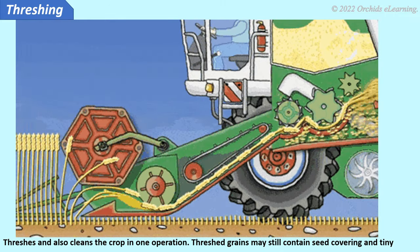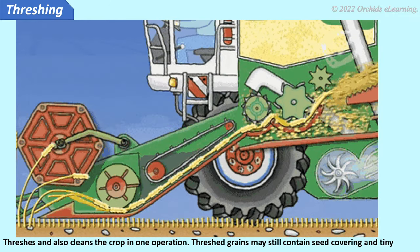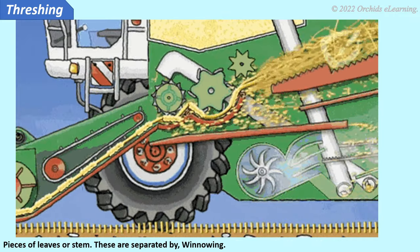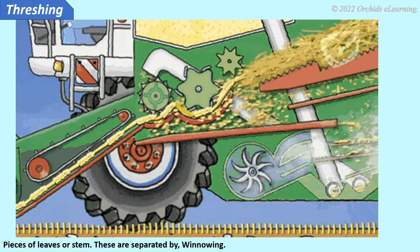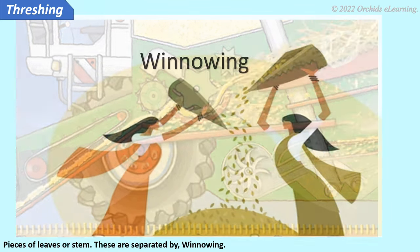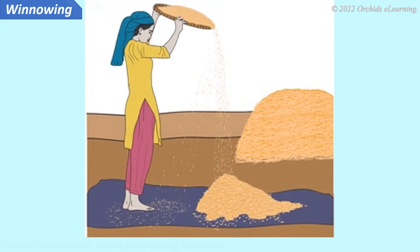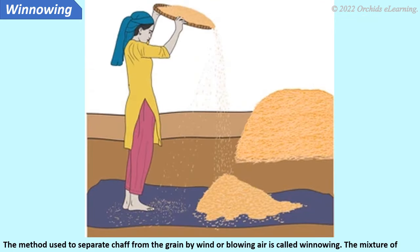Threshed grains may still contain seed coverings and tiny pieces of leaves or stem. These are separated by winnowing. Winnowing is the method used to separate chaff from the grain by wind or blowing air.